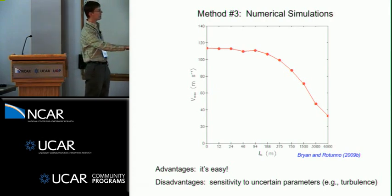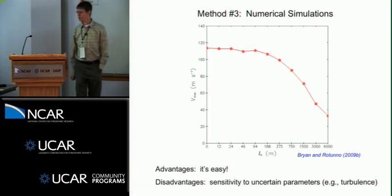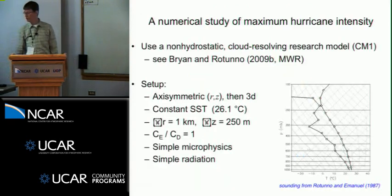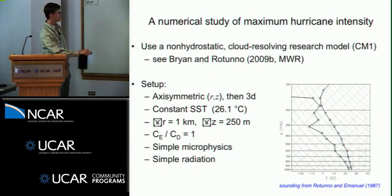All I did was I changed this number and I ran the model again. So each dot is a different model simulation and you see I can get a storm with maximum winds of 30 meters per second or 120 meters per second if I want to. I'm going to talk about this slide more later so I'll describe it more later.